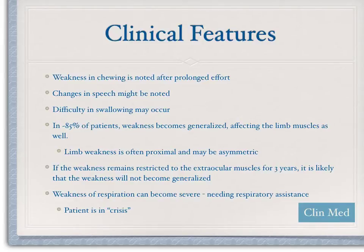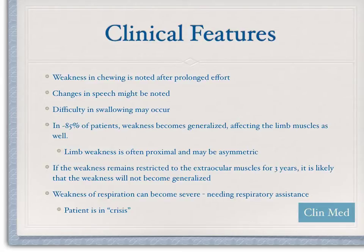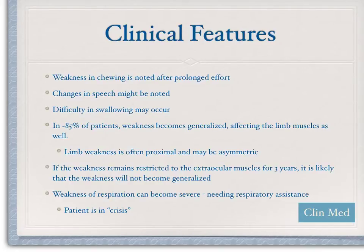About 85% of patients will develop some type of generalized weakness. Interestingly, if weakness remains restricted to the extraocular muscles for three years and is not found anywhere else, it is likely it will not become generalized. You also need to pay attention to respiratory muscles, since many of those are skeletal muscles. If weakness affects breathing, it could cause fatigue of those muscles and suppress the drive to breathe. Some patients do require a ventilator when in what we call a myasthenic crisis.